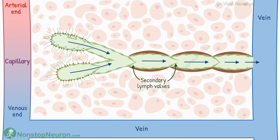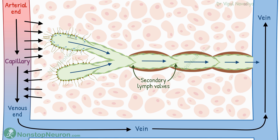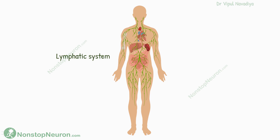In the end, the lymph is emptied into veins. In a nutshell, most of the filtered fluid comes back to blood right at the capillary, but the remaining portion joins back traveling through the lymphatics. Please note that this is a schematic diagram — we are ignoring the lymph nodes and other anatomical details to focus on physiology.